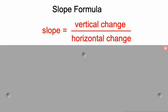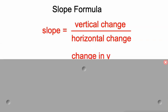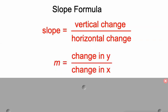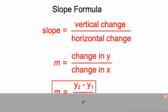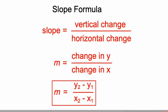We know slope is vertical change over horizontal change. You can find vertical change is also known as the change in the Y, and horizontal change is known as the change in the X. So that brings us to this formula. Change in Y, which is Y sub 2 minus Y sub 1, over change in X, which is X sub 2 minus X sub 1.